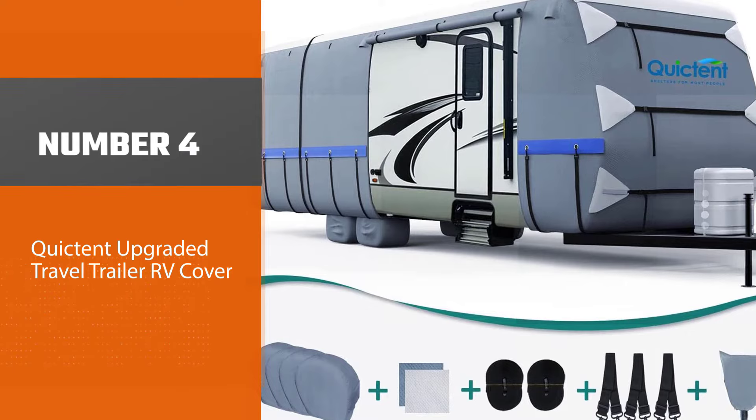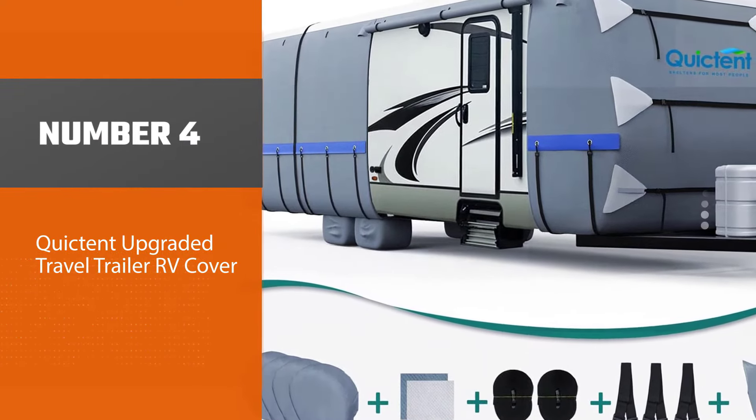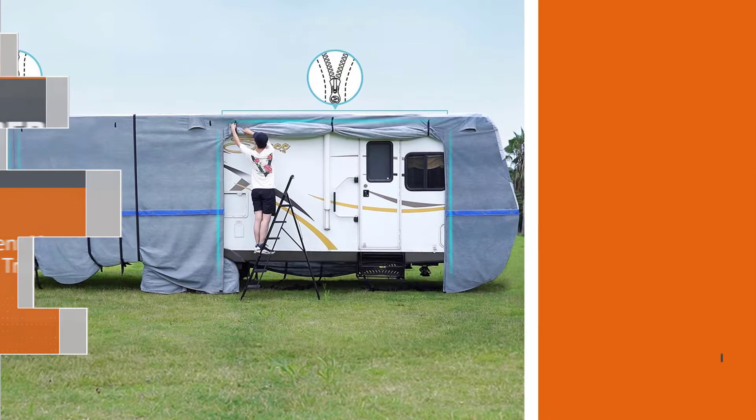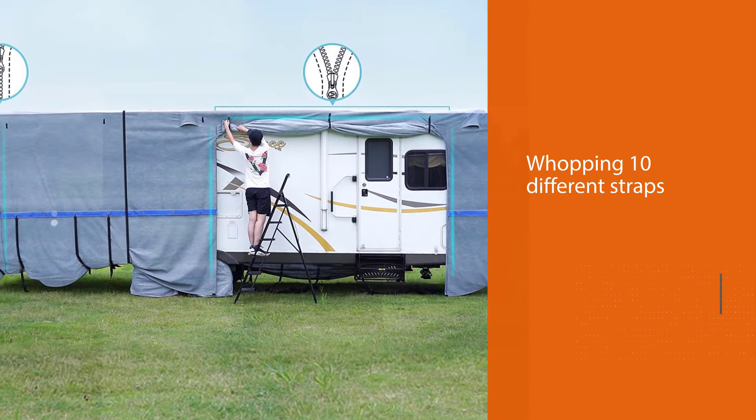Number four: QuickTent Upgraded Travel Trailer RV Cover. The first thing you'll notice about the QuickTent camper cover is it has a whopping 10 different straps that wrap around the bottom of the camper.